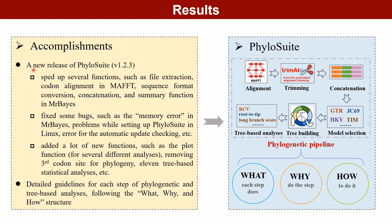The latest release of PhyloSuite, version 1.2.3, offers several notable improvements over its predecessors. These include: 1. Optimized running speed for several functions, including sequence extraction, codon alignment, and more. 2. Bug fixes for issues such as the memory error when running MrBayes, PhyloSuite freezing on Linux platforms, etc. 3. Addition of several new functions, such as 11 statistical analyses based on phylogenetic trees.